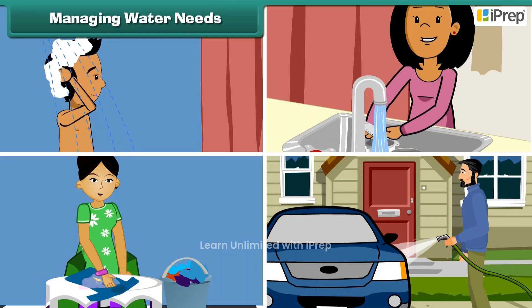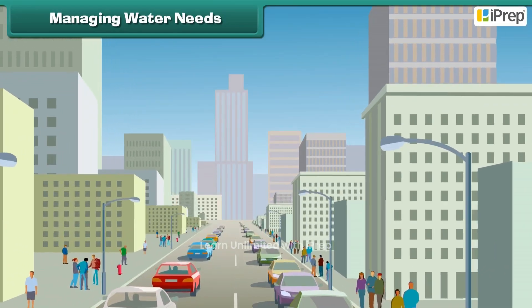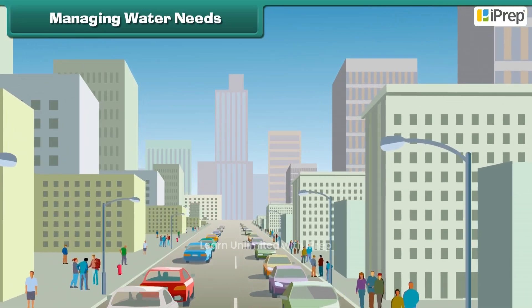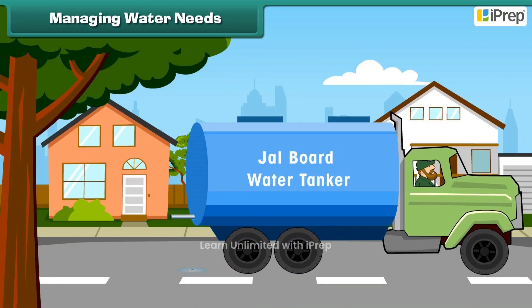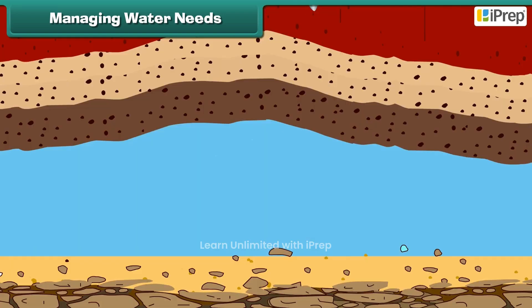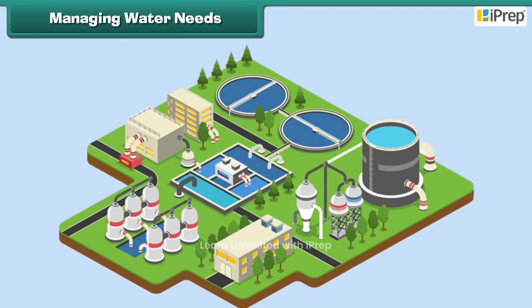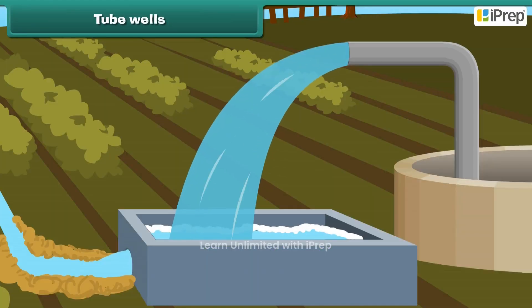People living in cities get water from tanks supplied by the water board, from hand pumps, by digging bore wells, or from nearby water treatment plants. A tube well is a small diameter hole drilled in the subsoil formation.